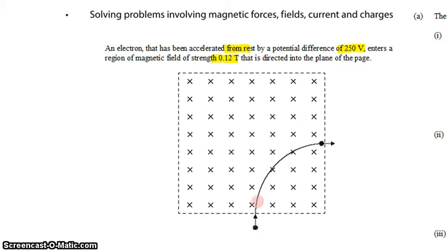This would be our electron. It passes into the magnetic field, experiences a force which is perpendicular to its direction of travel, and that causes it to bend into a semicircular path.